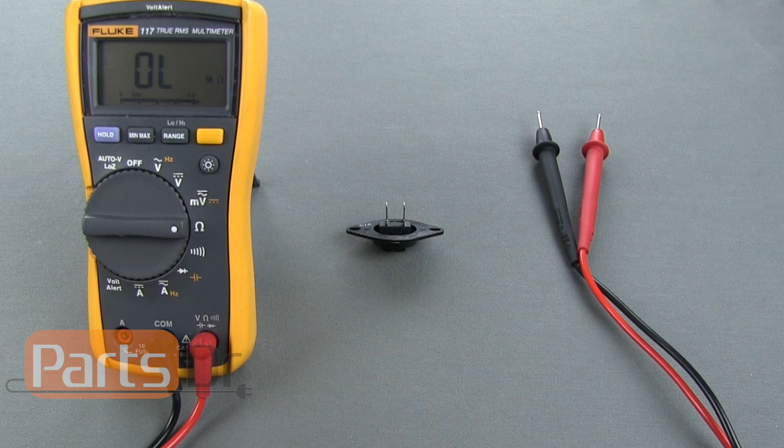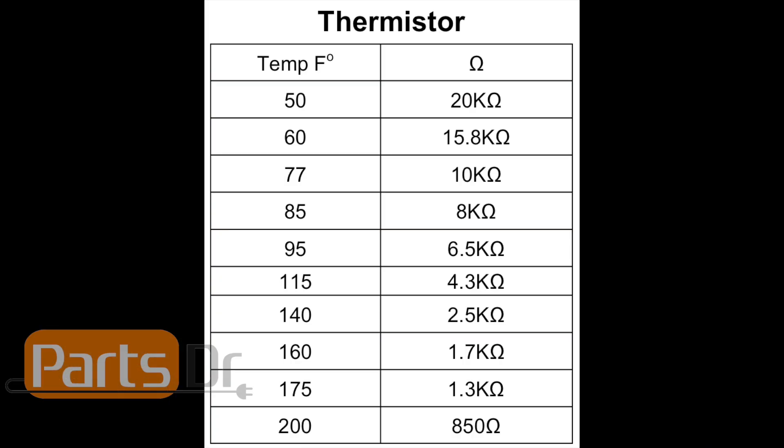The resistance value of the thermistor varies depending on the temperature of the dryer. Here's a chart that shows the different resistance values at different temperatures.